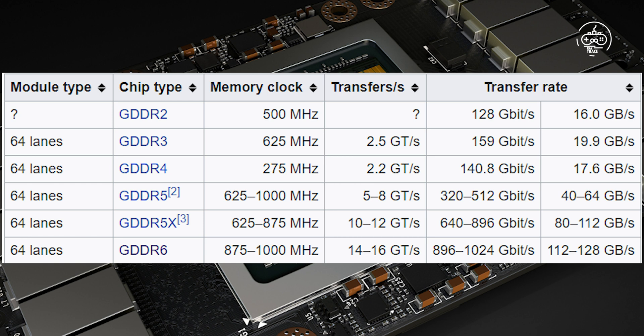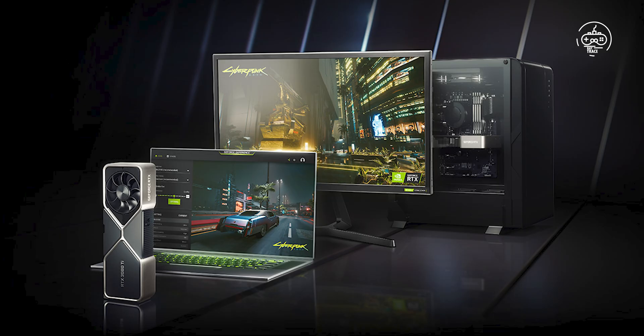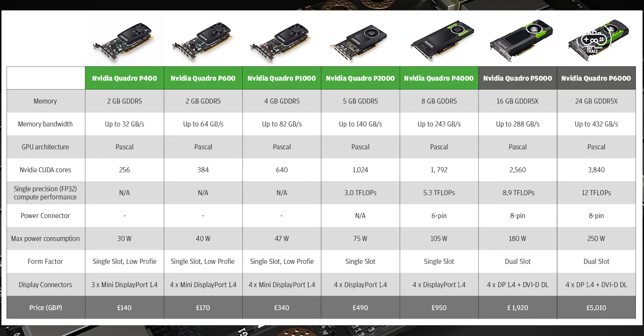Micron, Samsung, and Hynix are currently manufacturing the GDDR6 memory standard. Cards from Micron and Samsung will max out at 16 gigabits per second, meeting the demands of advanced users, and will feature 16 and 32 gigabyte dies. Hynix's memory standards will appeal to the mainstream market, with rates ranging from 10 to 14 gigabits per second, and will have an 8 gigabyte die.